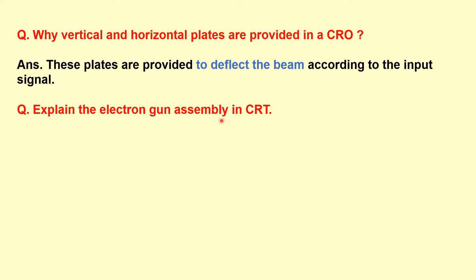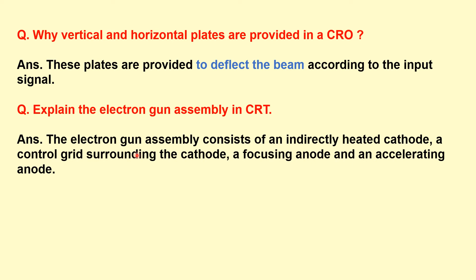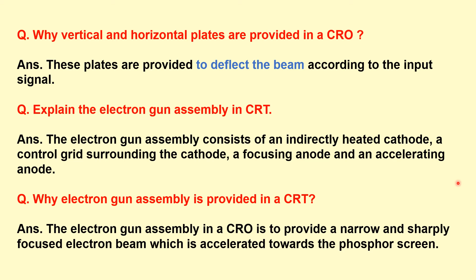Explain the electron gun assembly in a CRT. The electron gun assembly consists of an indirectly heated cathode, a control grid surrounding the cathode, and a focusing anode and accelerating anode. So why electron gun assembly is provided in a CRT? The electron gun assembly is to provide a narrow and sharp electron beam which is accelerated towards the phosphor screen.